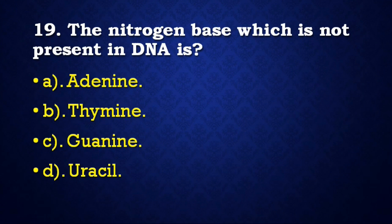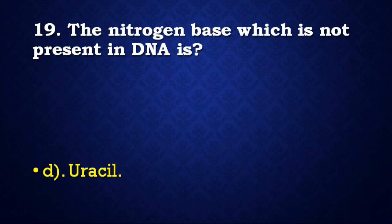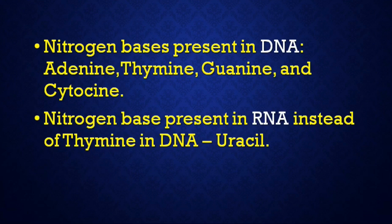Next question: The nitrogen base which is NOT present in DNA is — adenine, thymine, guanine, or uracil? Correct answer is uracil. Nitrogenous bases present in DNA are adenine, thymine, guanine, and cytosine. In RNA, uracil is present instead of thymine.